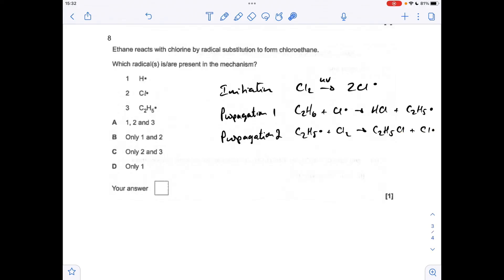And then obviously the termination steps are just combination of any two radicals. So which radicals are present? Well, we've definitely got that one there, the Cl radical, and we've got that one there. So it was two and three only, so it was option C.